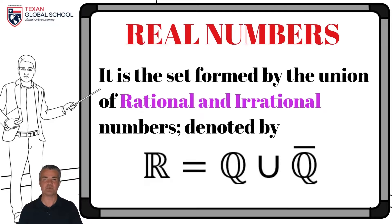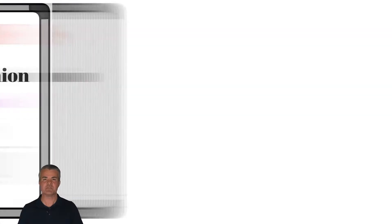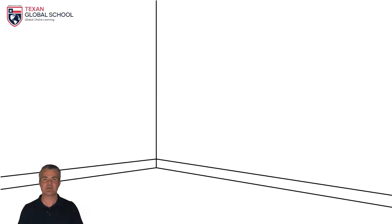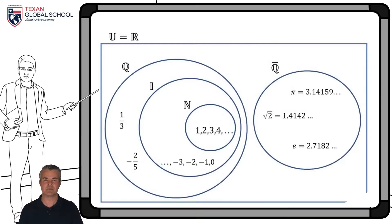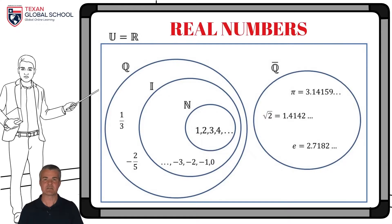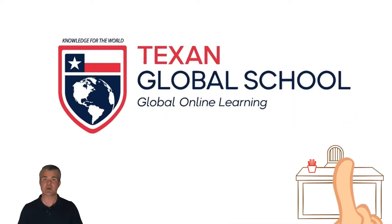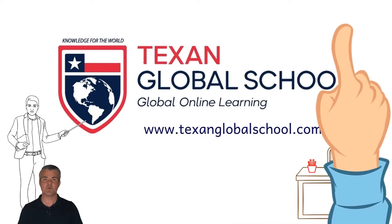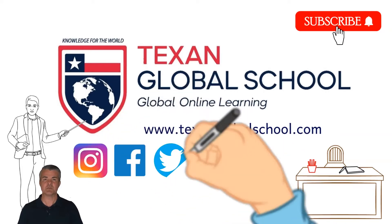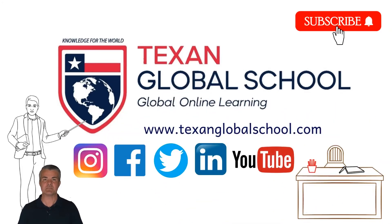The Venn-Euler diagram summarizes the analysis. We can see the set of real numbers as the universe. Natural numbers are a subset of integer numbers, which, in turn, are a subset of rational numbers. And we place the set of irrational numbers separated since it is the complement of the rational numbers. Texan Global School. Global online learning. Knowledge for the world.